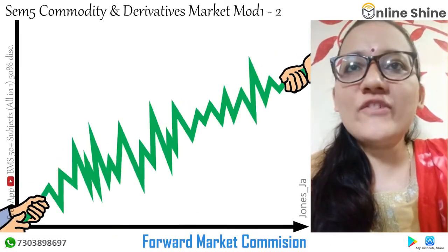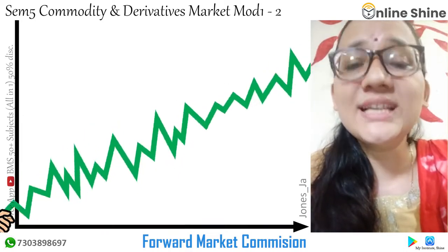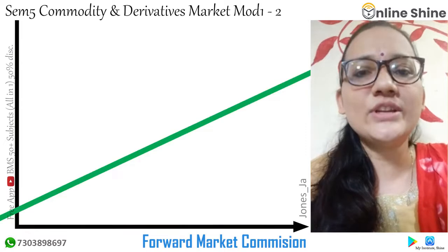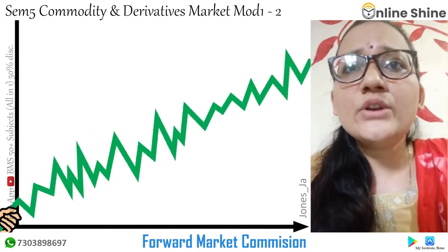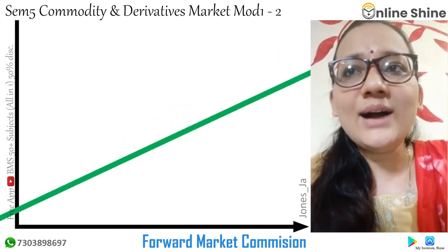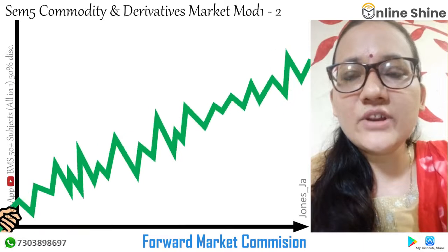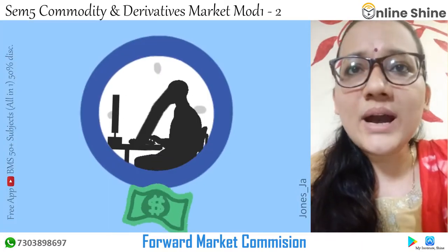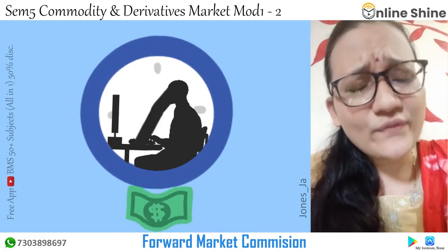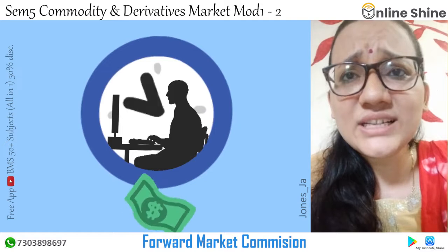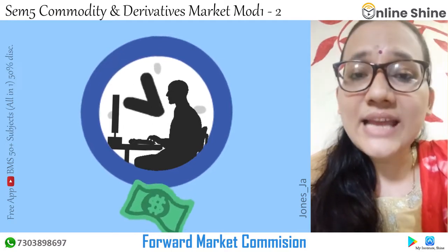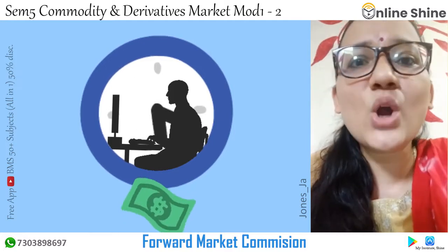Next we talk about the Forward Market Commission, another very important institution. It was established in 1953 under the provisions of the Forward Market Contract Regulation Act 1952. It consists of not less than two but not exceeding the aforementioned members appointed by the central government, one being nominated as Chairman. The Forward Market Commission was the chief regulator of the Commodity Future Market in India. As of July 2014, it regulated $17 trillion worth of commodity traded in India, headquartered in Mumbai and overseen by the Ministry of Finance.